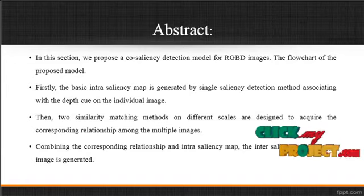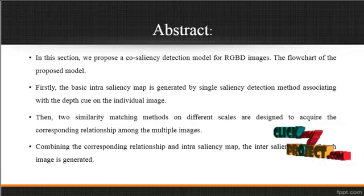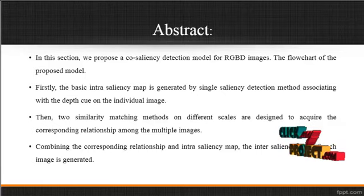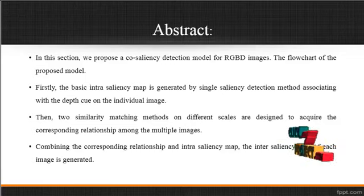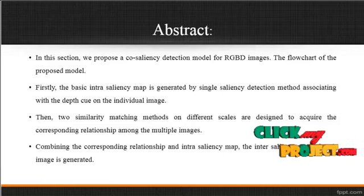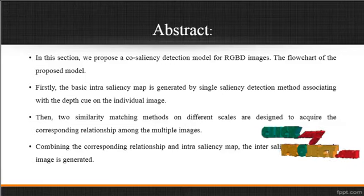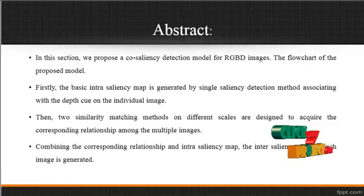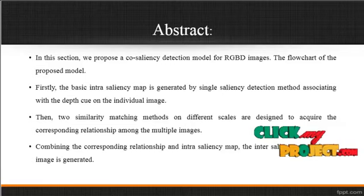Now we are going to discuss about the abstract for the process. We propose a co-saliency detection model for RGBD images. Firstly, the basic intra-saliency map is generated by a single saliency detection method, associating with the depth flow on the individual images. Then two similarity matching methods on different scales are designed to acquire the corresponding relationship among the multiple images.